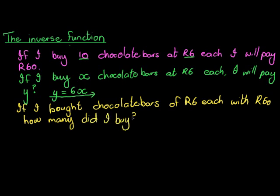Well, this time it's obvious that if I had used R60 and I bought chocolate bars each with R6, how many times did my R6 divide into my R60? Well, it went in 10 times. So let's write that question in a little bit more abstract form.